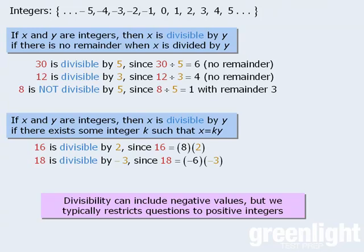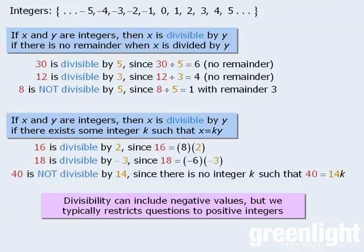Okay, moving along, one last example here. 40 is not divisible by 14 since there exists no integer k such that 40 is equal to 14 times k.